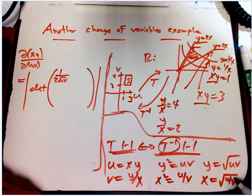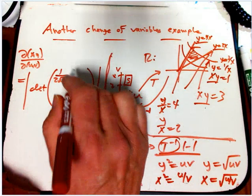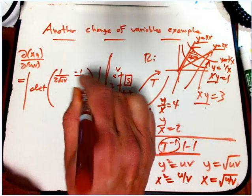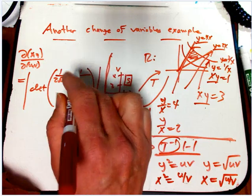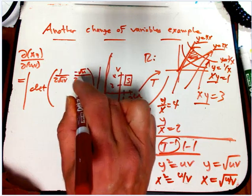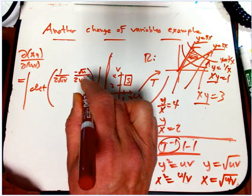So dx/dv is going to be minus 1 over 2, oops, minus root u over 2v to the 3 halves.